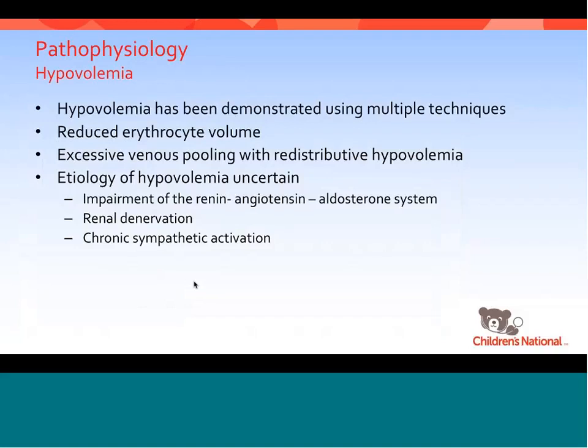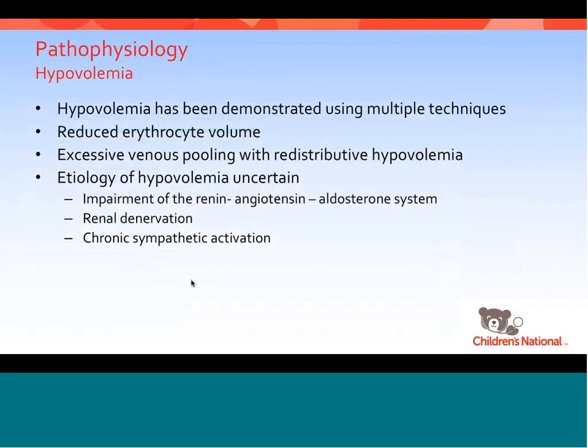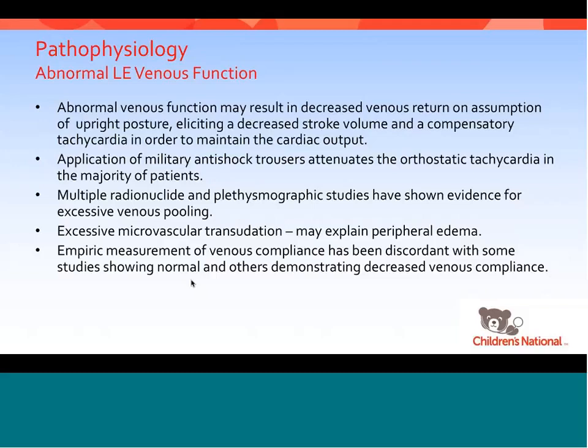Many patients with POTS have normal to low aldosterone levels. There may be renal denervation, and during chronic sympathetic activation the kidney tends to excrete water. Abnormalities in lower extremity venous function are evident — when patients stand up, you'll notice bluish-purple mottling of the lower extremities, probably related to venous pooling.